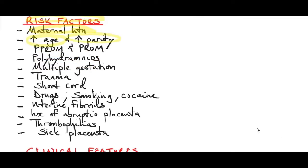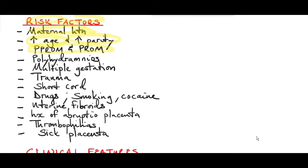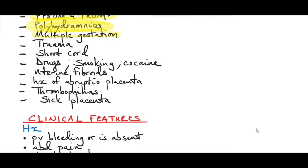Increased age and increased parity increases the risk of abrupta placenta by three times, especially in grand multiparous women. In PPROM and PROM, the sudden escape of amniotic fluid causes sudden uterine decompression — the space inside the uterus reduces because amniotic fluid has come out, so the uterus contracts. This brief contraction can cause detachment of the placenta from the uterus. Polyhydramnios similarly — when there's sudden escape of fluid after rupture of membranes — causes the same sudden uterine decompression.